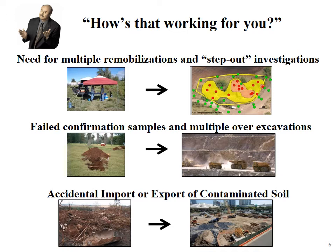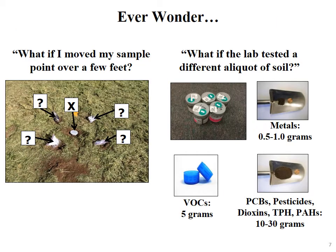A big problem we've also had in Hawaii is the accidental import or export of contaminated soil. Someone goes out to a large area of contaminated soil, collects essentially a few spoonfuls from different spots — a few discrete samples — they test clean enough, the soil gets imported to a site, and someone retests it later and finds contamination.